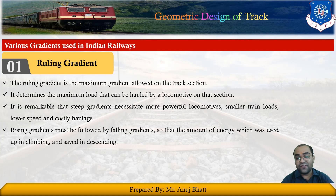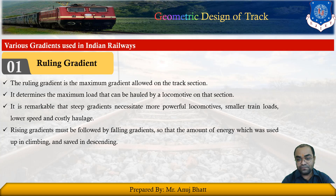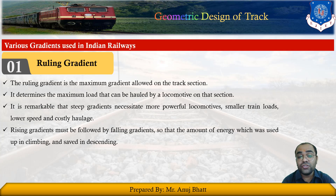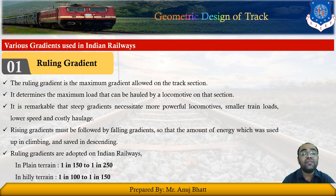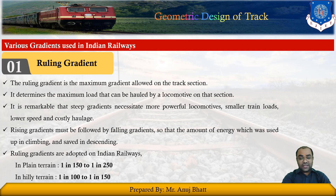Indian Railways does not specify any fixed ruling gradient due to enormous variation in the topography of the country as well as requirements of different speeds and traffic. For plain terrain, we use 1 in 150 to 1 in 250 gradient, while in hill terrain we use 1 in 100 to 1 in 150 gradient. Once the ruling gradient is specified for a section, all other gradients provided in that section should be flatter than the ruling gradient.